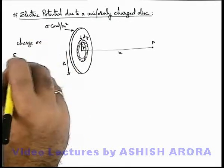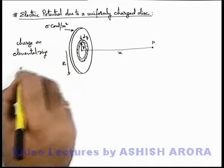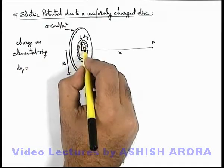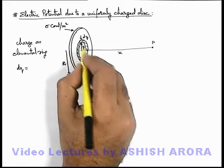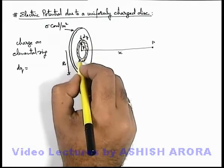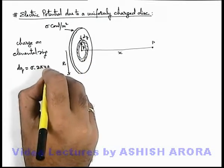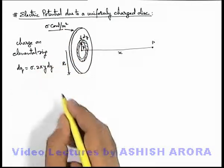Charge on elemental ring dq: the length of this ring, its circumference, is 2πy and the width is dy. Total charge on the elemental ring is sigma times 2πy dy, that is sigma is the surface charge density multiplied by the area of this ring.